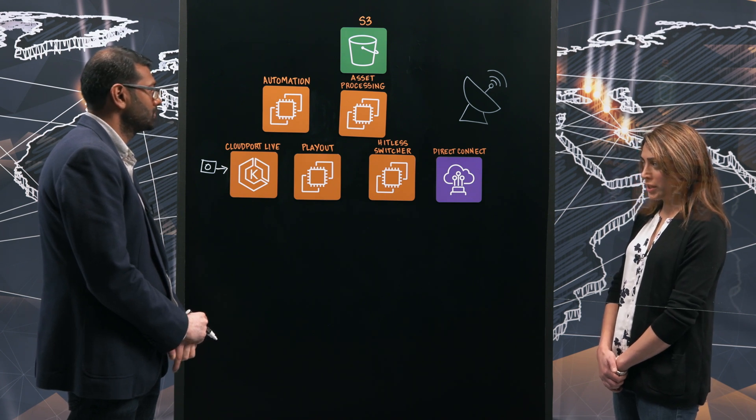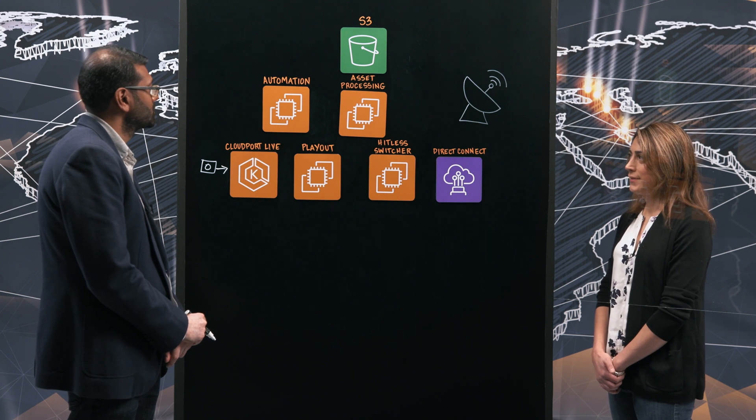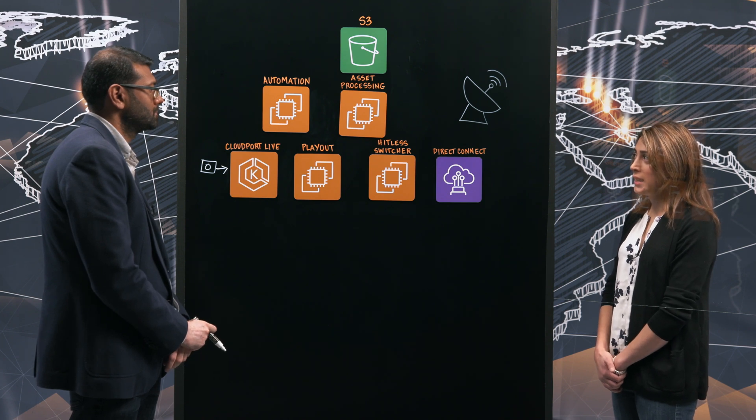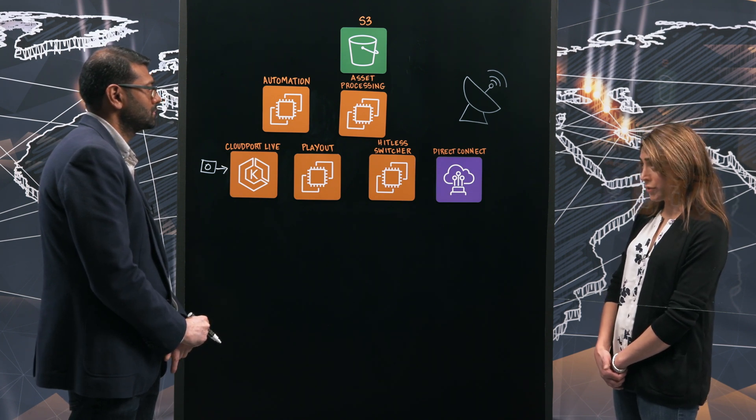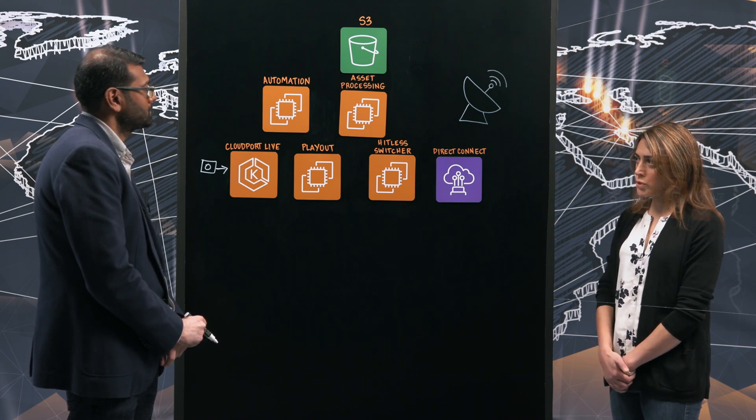Okay, so you have it in CloudPort Live, which I see is a Kubernetes cluster. What happens next? We usually have an automation system that's involved that is responsible for scheduling. I see, so you schedule events and that also resides on a cluster of EC2s. Is that correct? Correct.